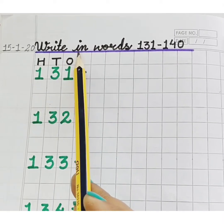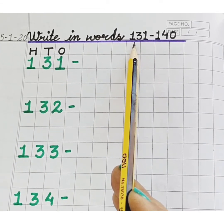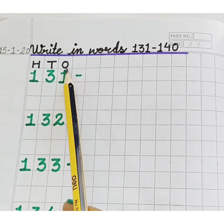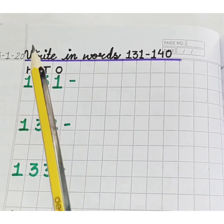Hello children, how are you? Hope you all are fine. We have already learned numerals and their number names 1 to 130. Today we are going to learn numerals and their number names 131 to 140, and write them in words. We will write O for ones, T for tens and H for hundreds. Let's start.